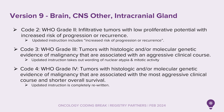Next, we have version 9 — brain, CNS other, and intracranial gland updates. Code 2, WHO grade 2, has been updated: infiltrative tumors with low proliferative potential with increased risk of progression or recurrence — the updated instruction includes that increased risk language. Code 3, WHO grade 3, shows tumors with histologic and/or molecular genetic evidence of malignancy that are associated with an aggressive clinical course. The updated instruction removes the wording of nuclear atypia and mitotic activity.